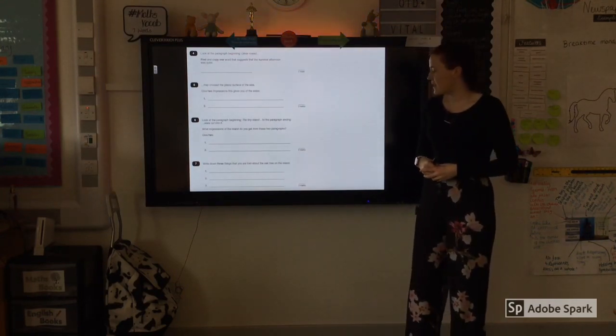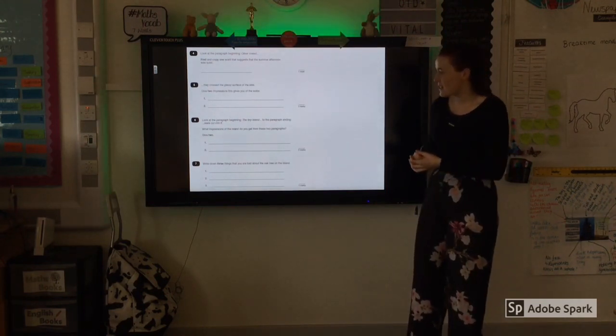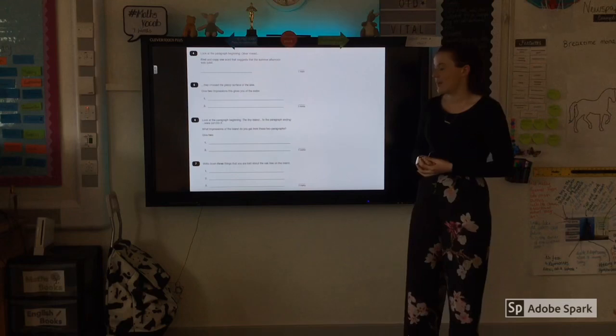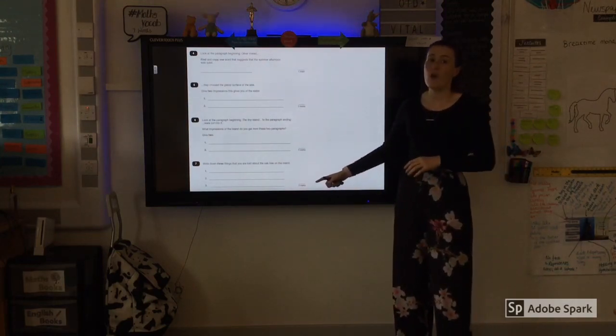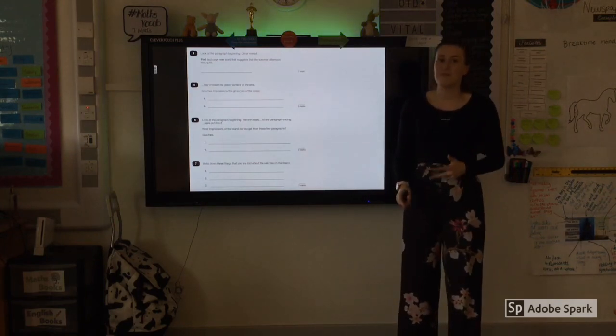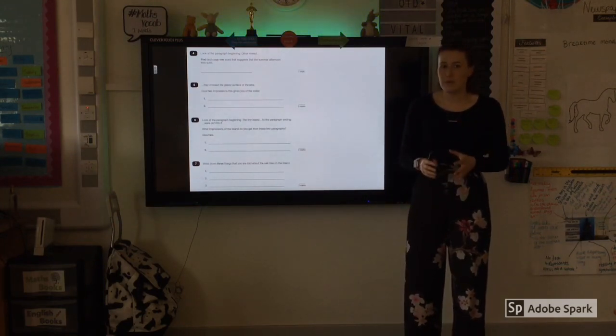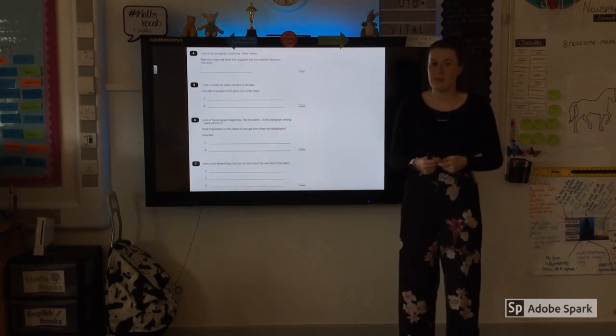And finally, number seven. Our first three mark answer of the whole press paper. Write down three things that you are told about the oak tree on the island. This is a nice friendly three mark answer. Again, all you have to do is go back into the text, find three different things. Be very careful that you are writing three completely different points and you're not just repeating the same thing twice.